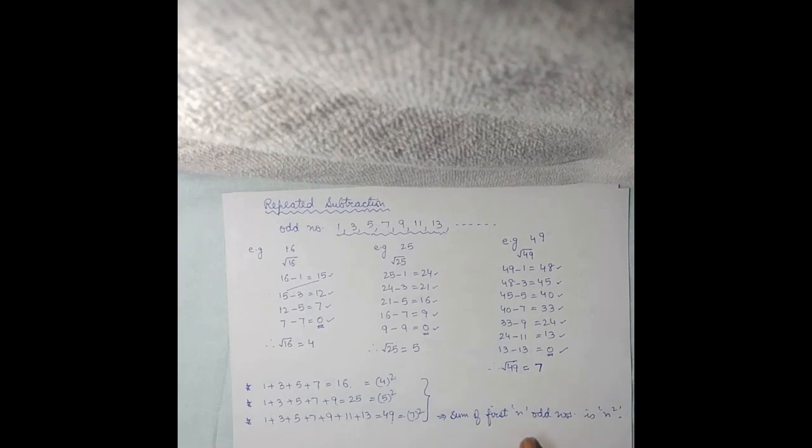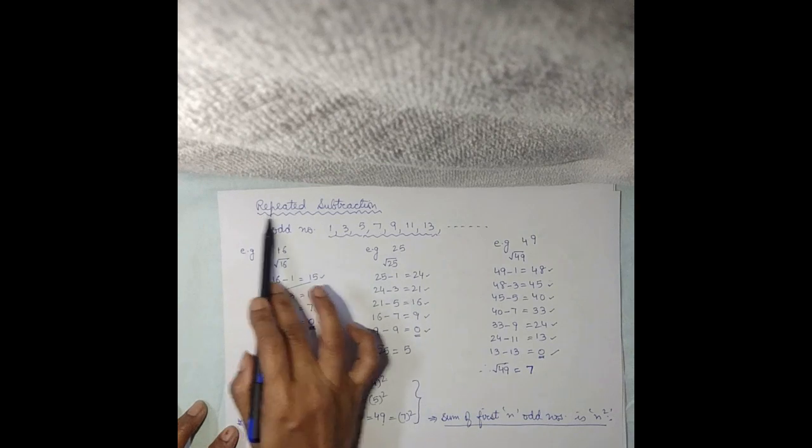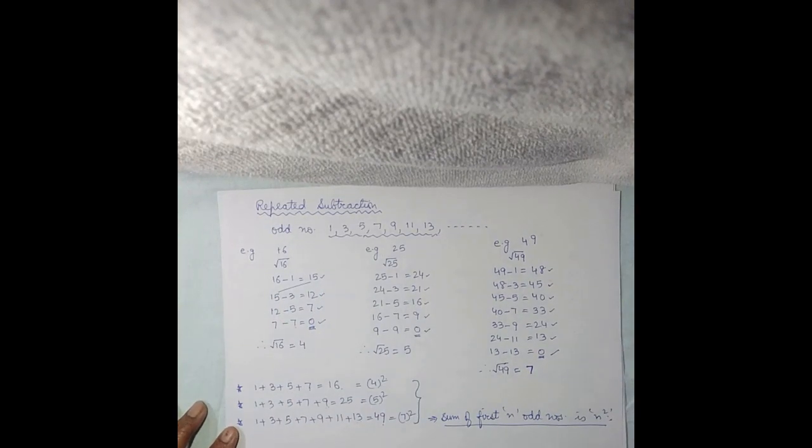So the number of odd numbers added gives you n, and the sum equals n square. I hope this Repeated Subtraction Method is clear to all of you. In the next video, we will take the method of Prime Factorization. Thank you.